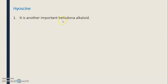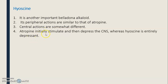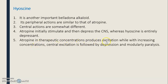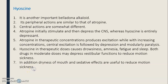The next drug is hyoscine, another important belladona alkaloid. Its peripheral action is similar to that of atropine, but central actions are somewhat different. Atropine initially stimulates and then depresses the CNS, whereas hyoscine essentially gives a depressant action. Hyoscine in therapeutic doses causes drowsiness, amnesia, fatigue, and sleep. Both drugs in moderate doses depress function to reduce motion sickness, and dryness of mouth and sedative effects are also useful in reducing motion sickness.